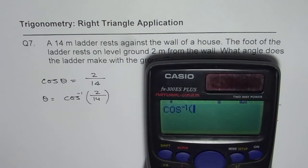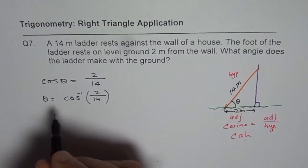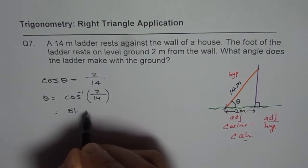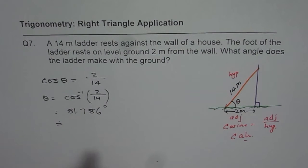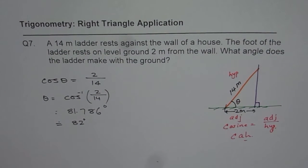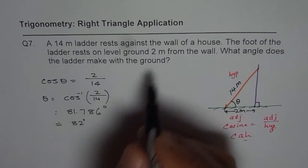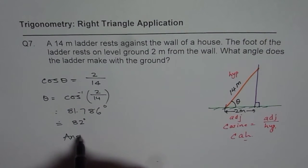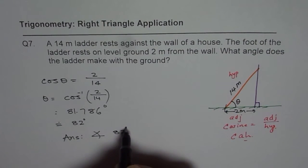Shift cos inverse 2 divided by 14 bracket close equals to 81.786 degrees. And we are rounding all angles to whole numbers, so it becomes 82 degrees. That is how you solve it. The angle that the ladder makes with the ground is 82 degrees.